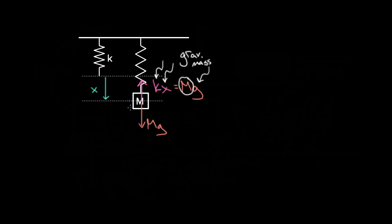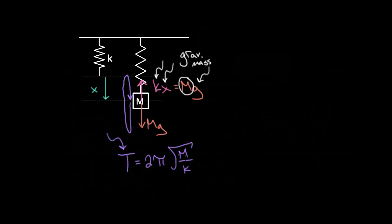Now, how could you get the inertial mass? Pull the block down a little extra, let go, and it will oscillate at a certain period. Measure that period with a stopwatch — how long it takes to go through one full cycle. That period equals 2π√(m/k). There's no little g or big G here; this has nothing to do with gravity. So if you measure the period, know the spring constant, and solve for m, you've solved for the inertial mass of that block. One stage gave you gravitational mass from mg; the second stage gave you inertial mass from 2π√(m/k). That's how you find both masses at once.